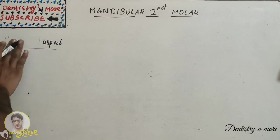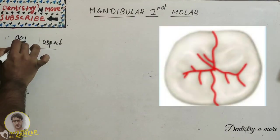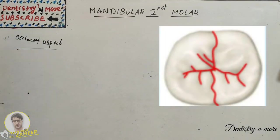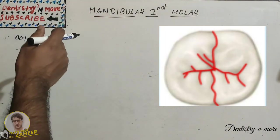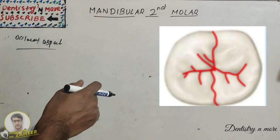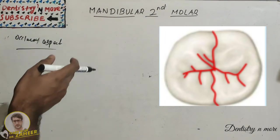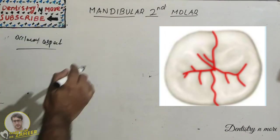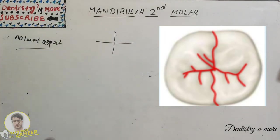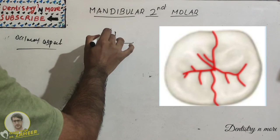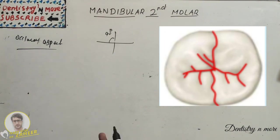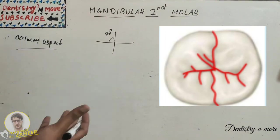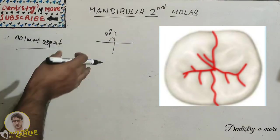And now we have the occlusal aspect. Occlusal aspect, it is roughly a rectangular. The central groove is in the center with the lingual and buccal developmental grooves meeting with the central groove at right angle. And the four cusps: two buccal, that is mesiobuccal and distobuccal, and two lingual, that is mesiolingual and distolingual, and many supplemental grooves radiating from the developmental grooves.